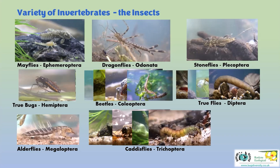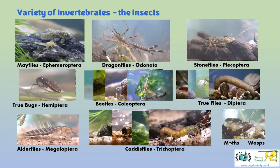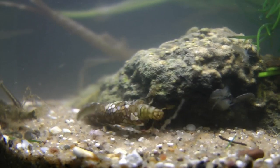Another variation - some caddis flies build a net, a bit like an underwater spider, catching material floating downstream and picking edible bits off the net. There is also a small representation of moths - china mark moths for instance - and a parasitic wasp that gets inside the caddis case and parasitises the larva. So all in all, an enormous variety of invertebrate life in our chalk streams.